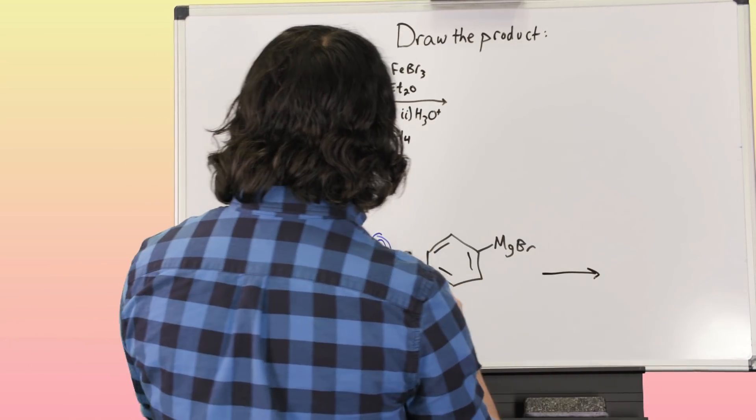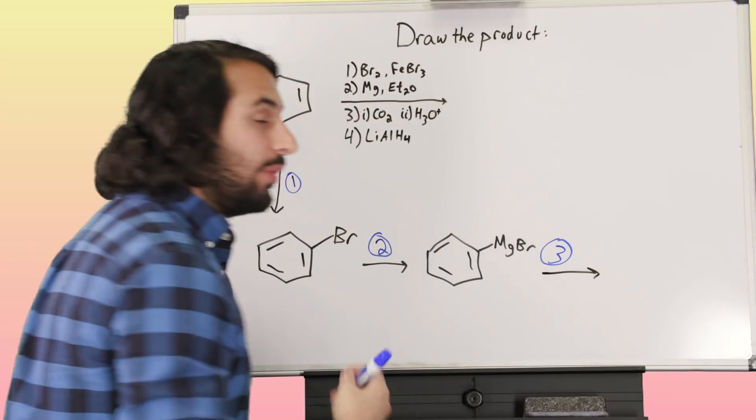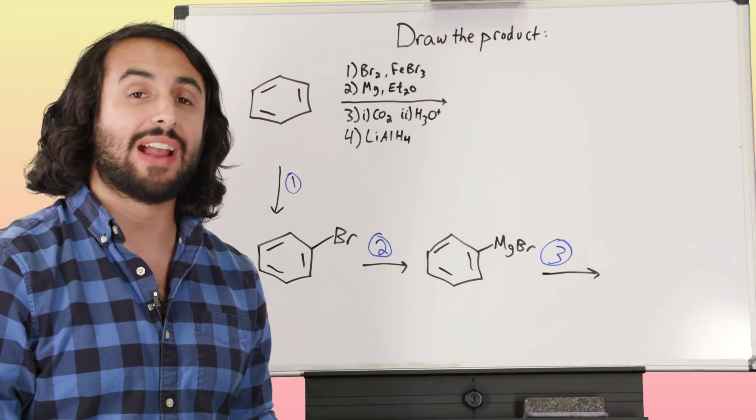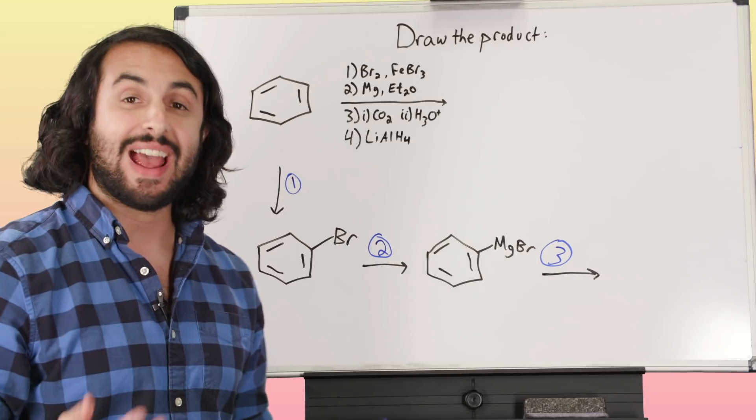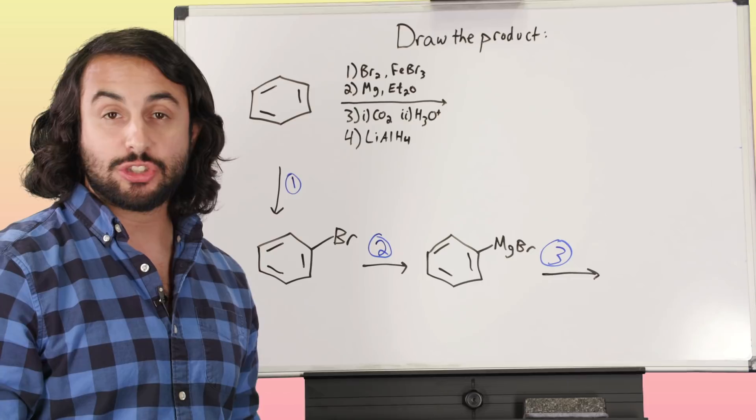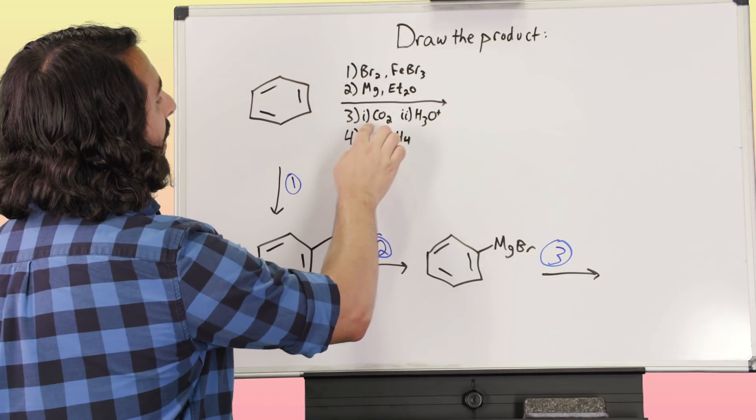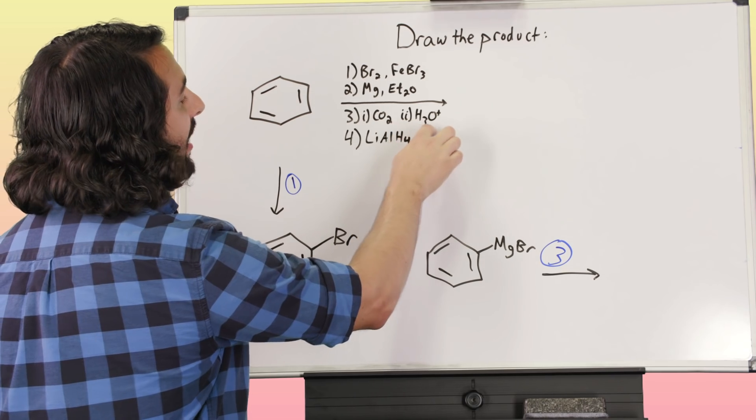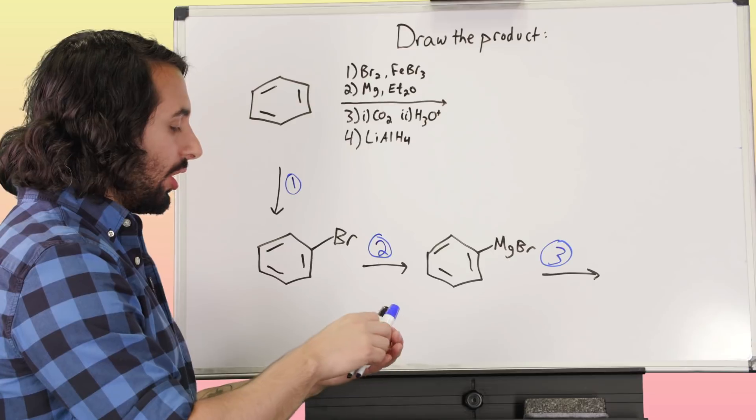Now how about this third reaction? Let's talk about number three. We know that Grignard reagents will usually attack carbonyl-containing compounds, usually an aldehyde or a ketone. Sometimes we see this happening with an ester as well. But there is one special case. Here we see in two steps we've got CO2 followed by your typical aqueous acidic workup for a Grignard. CO2, how is that going to work?